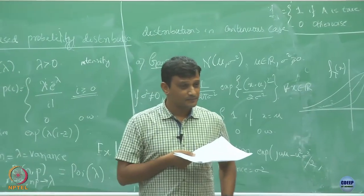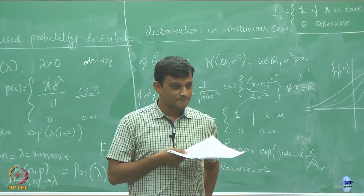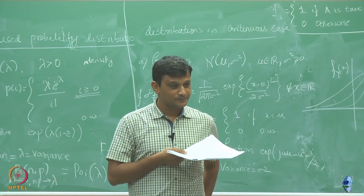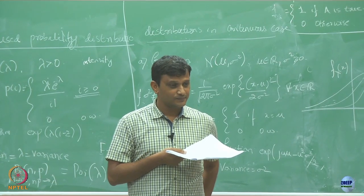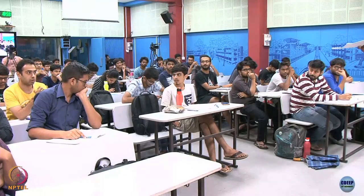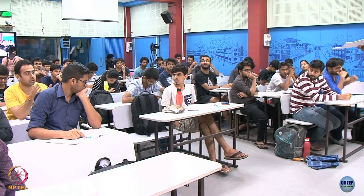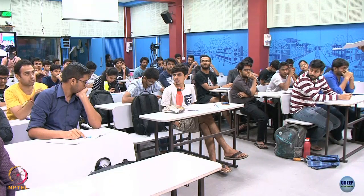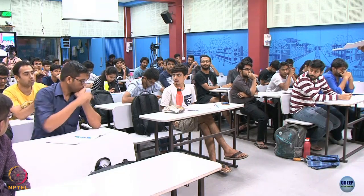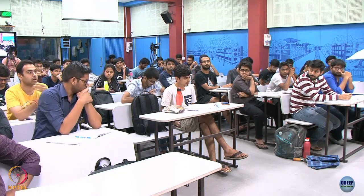For example, suppose we are manufacturing nuts and bolts. We set the mean value to be something like 50 microns, and we set the tolerance to be 0.1 or 0.4 — this accounts for manufacturing variation or similar effects.